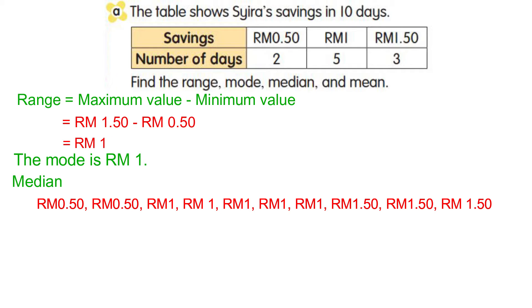Now find the average of the two middle values. 1 ringgit plus 1 ringgit divided by 2, we will get 1 ringgit. So the median is 1 ringgit.